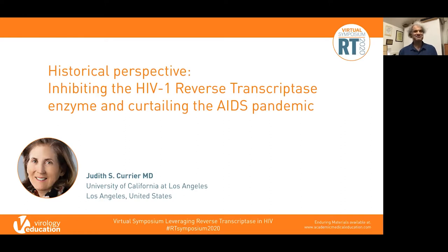Judith Currier is Professor of Medicine, Chief of the Division of Infectious Disease, and Co-director of the Center for AIDS Research and Education in the Department of Medicine at the University of California, Los Angeles. She was elected chair of the NA-sponsored AIDS Clinical Trials Group in 2017 and is currently the principal investigator of the UCLA AIDS Prevention and Treatment Clinical Trials Unit. She has been involved in the clinical care of HIV patients for over 25 years, with research focused on HIV therapeutics, long-term complications, sex differences in antiretroviral therapy, cardiovascular disease, and women's health. We are honored to have Dr. Currier speak to us on the historical perspective of inhibiting the RT enzyme and curtailing the AIDS pandemic.